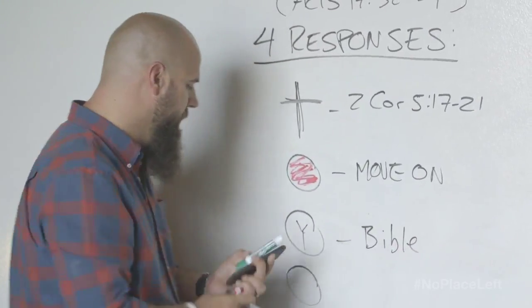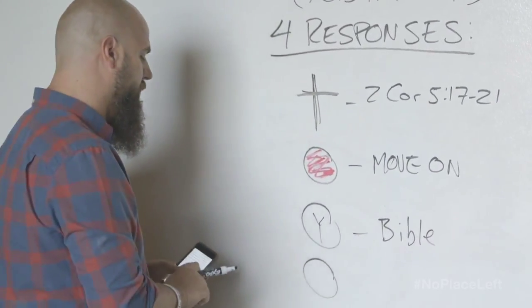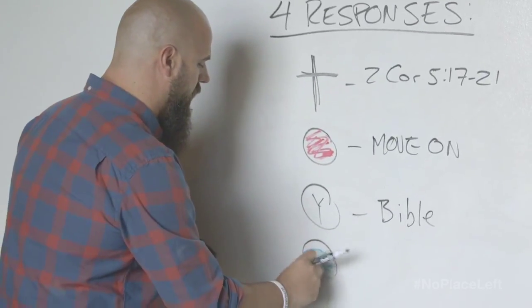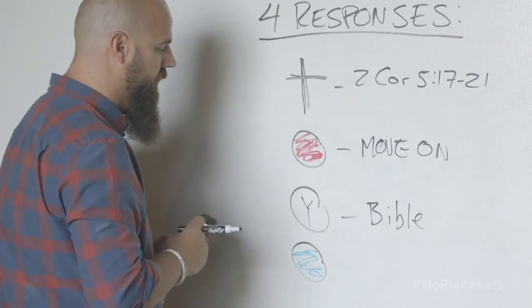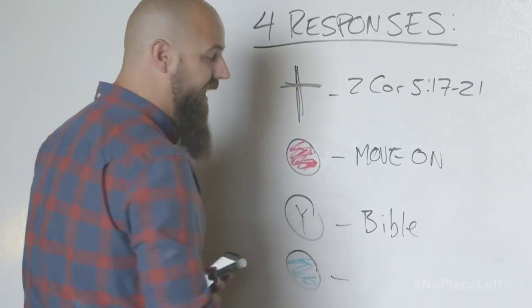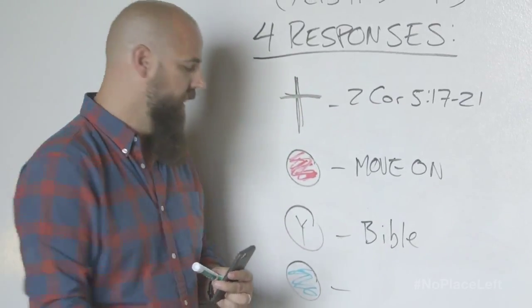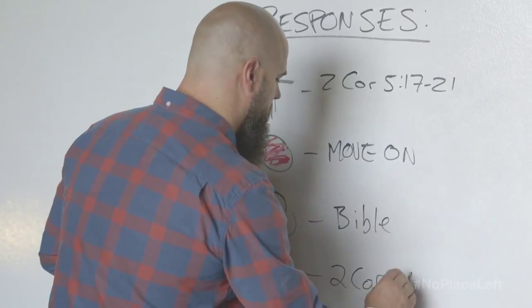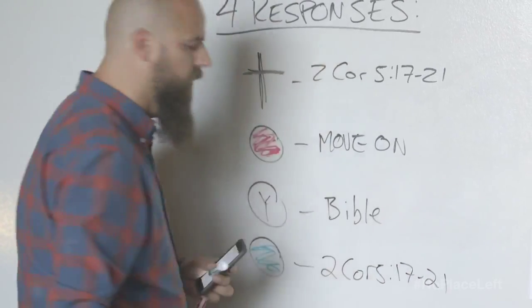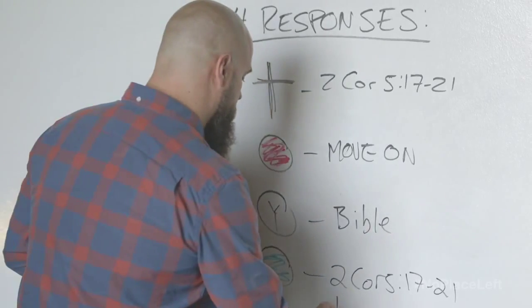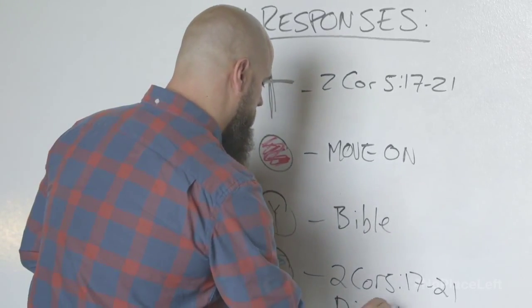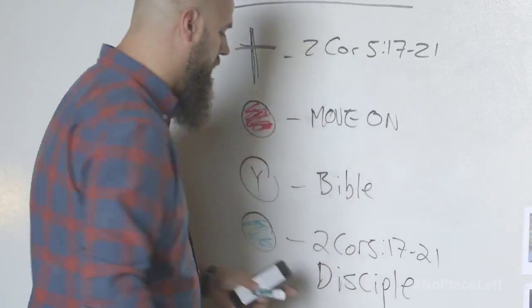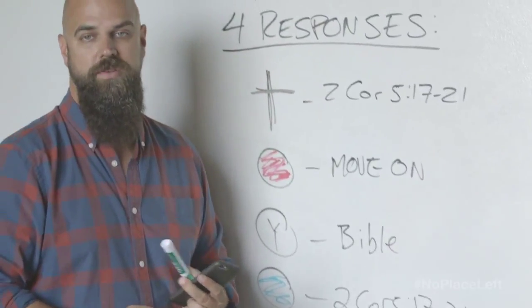The fourth type of person we're going to encounter are green light people, and those are people who are like 'Yes, I am ready to follow Jesus.' What we do is take them to 2 Corinthians 5:17-21, cast vision for them, and then begin to disciple them using short-term discipleship like the Seven Commands of Christ or some other tools you've got.